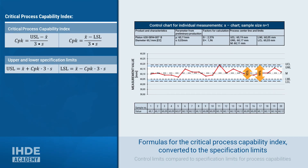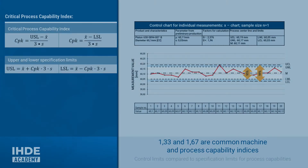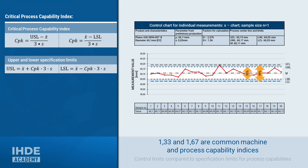Since we want to calculate the specification limits of the piston for a given process capability and known values for µ and S, the formulas for the critical process capability index must be transposed. Thus, for the upper specification limit: USL equals x-bar plus cpk times 3 times S. Correspondingly, LSL equals x-bar minus cpk times 3 times S.